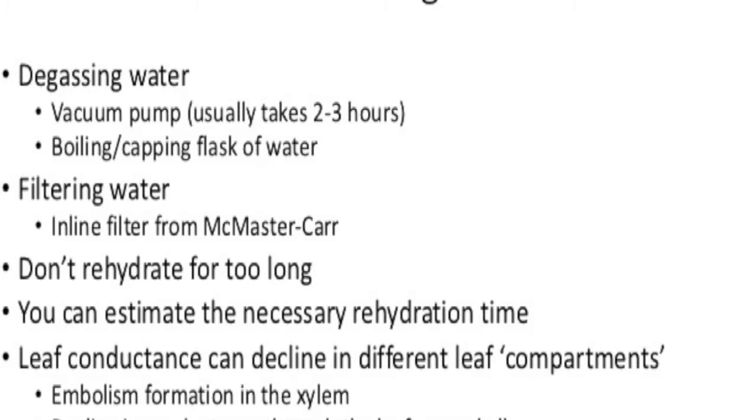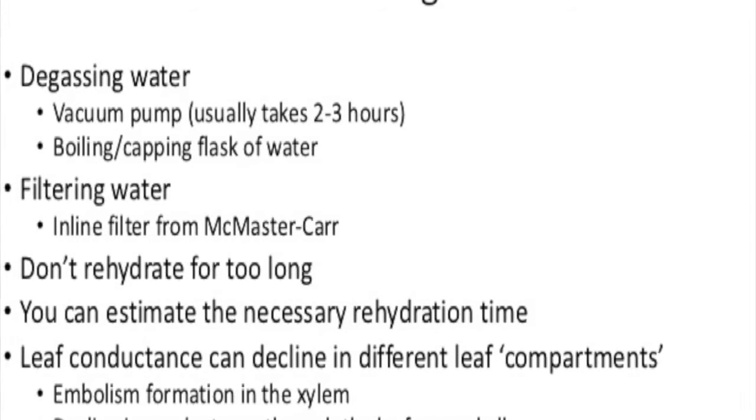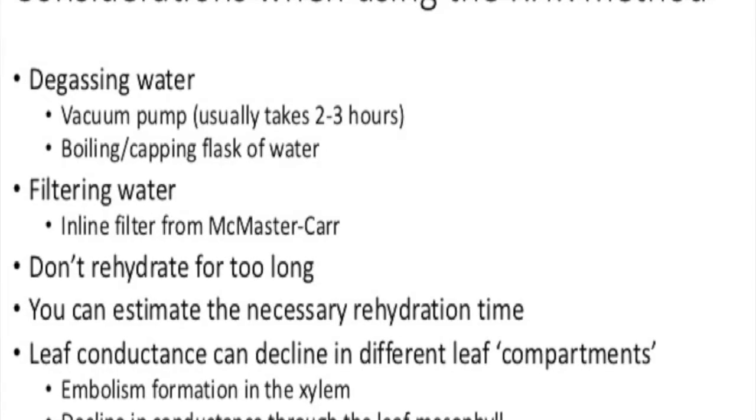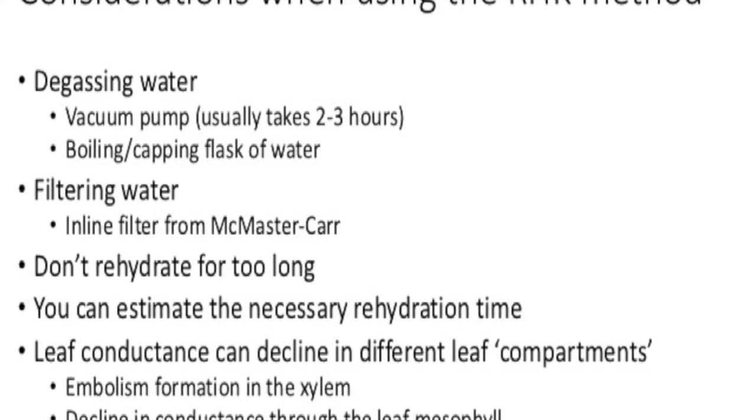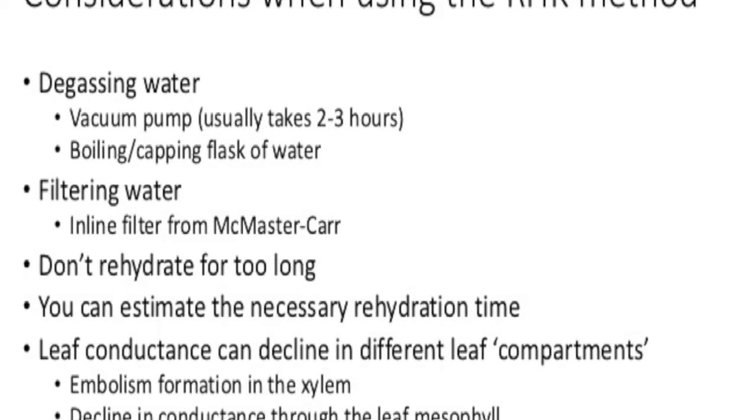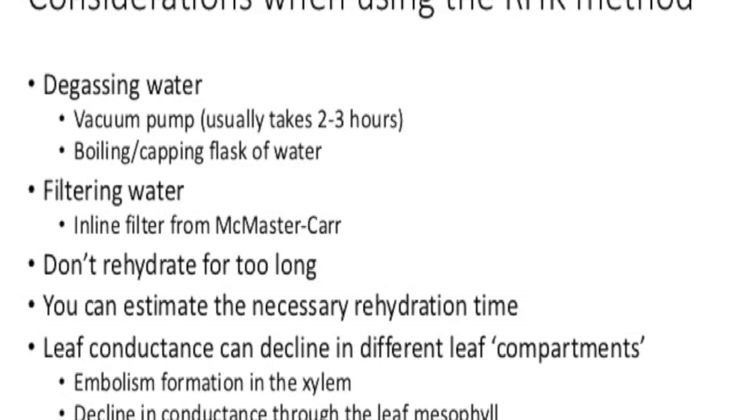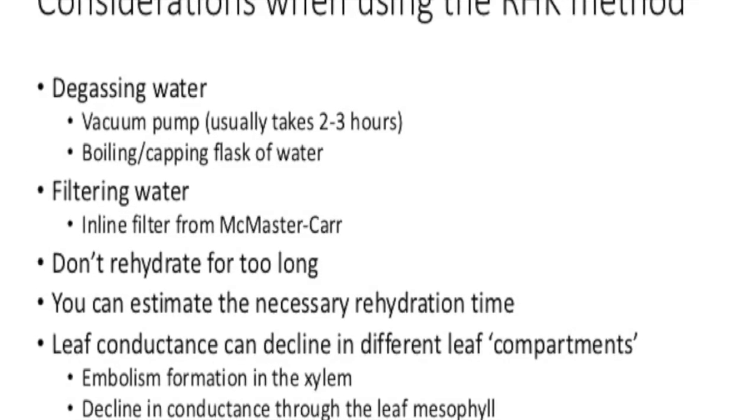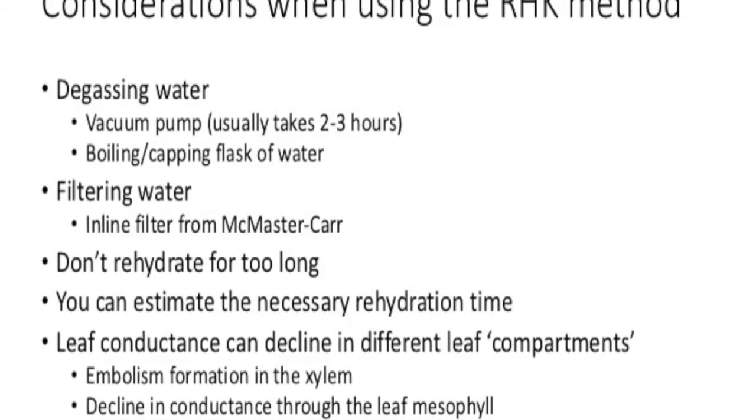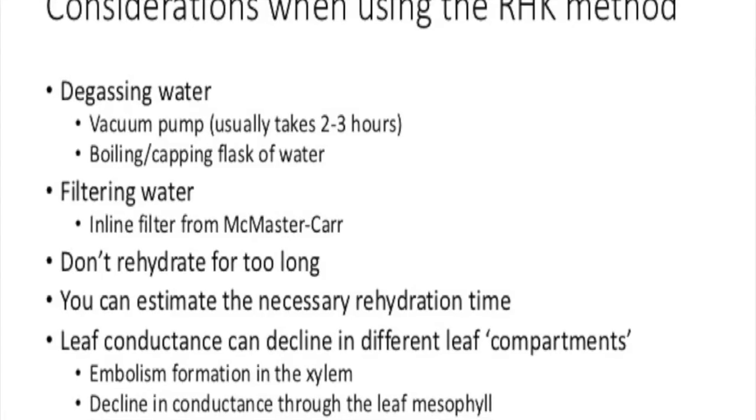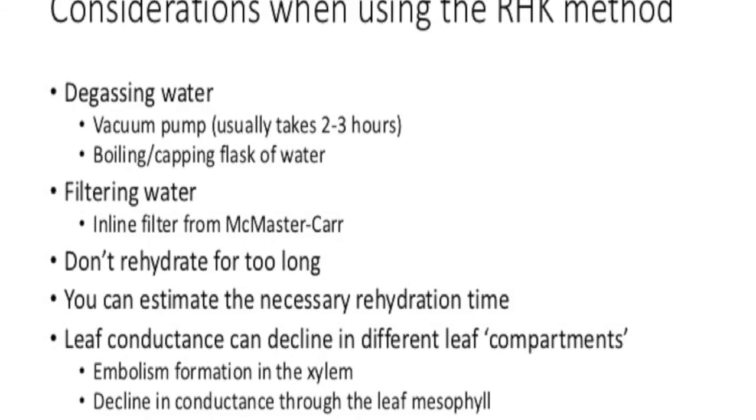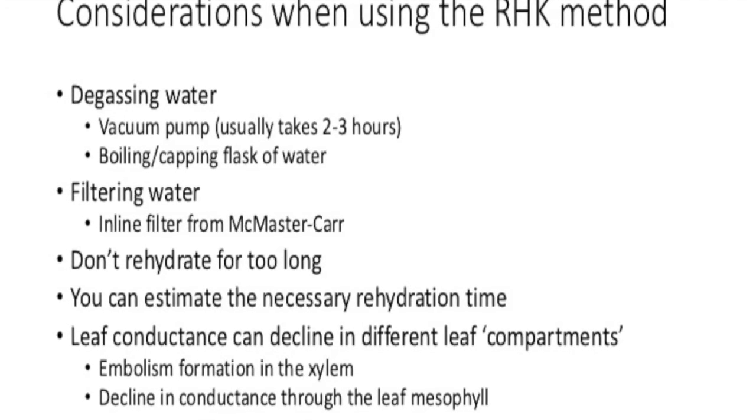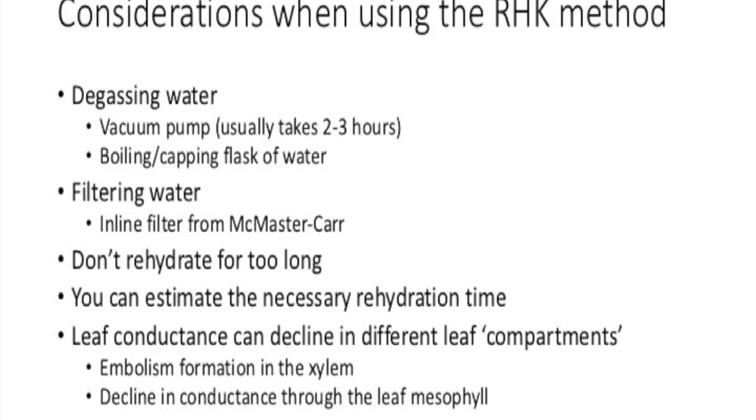Finally, it's important to note that the reduction in leaf hydraulic conductance that occurs as leaves dry out can be the result of different factors. So one of the places that can cause a decline in conductance is the embolism formation in the vasculature. But leaf hydraulic conductance can also decline due to reductions in the conductance outside of the xylem or in the mesophyll. The method that I've shown you here, this rehydration kinetics method, is biased towards measuring the change in conductance that occurs in the vasculature and is less sensitive to any changes that might occur in the mesophyll. So this is just important to note and keep in mind as you're interpreting your data.